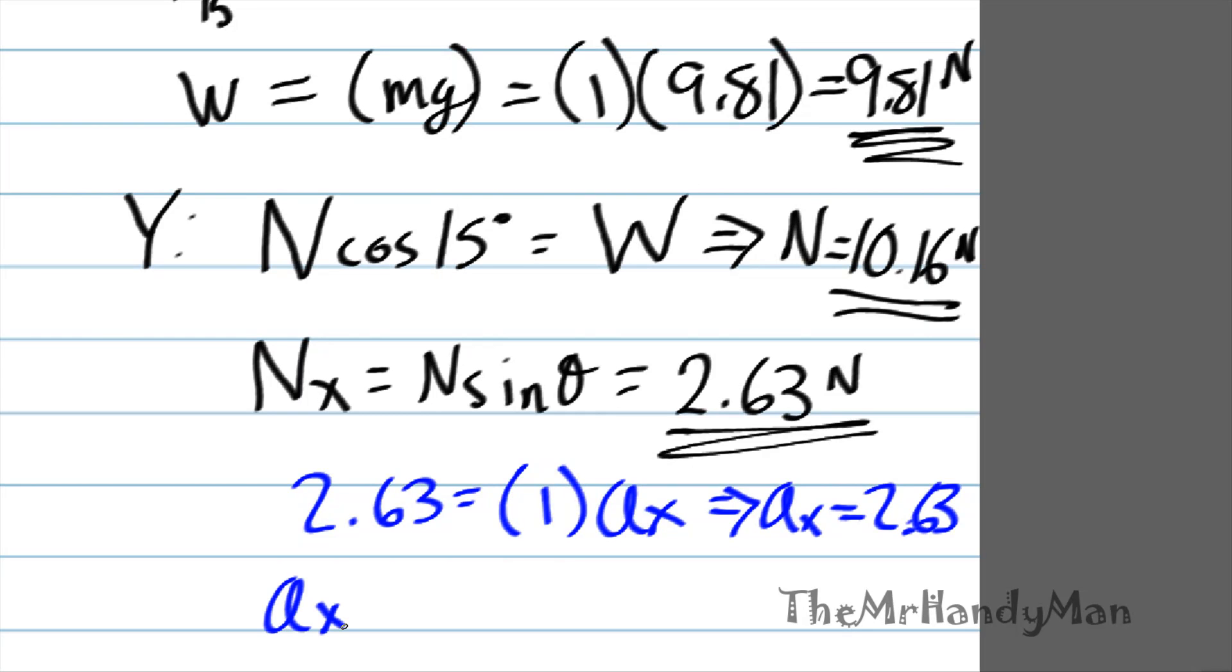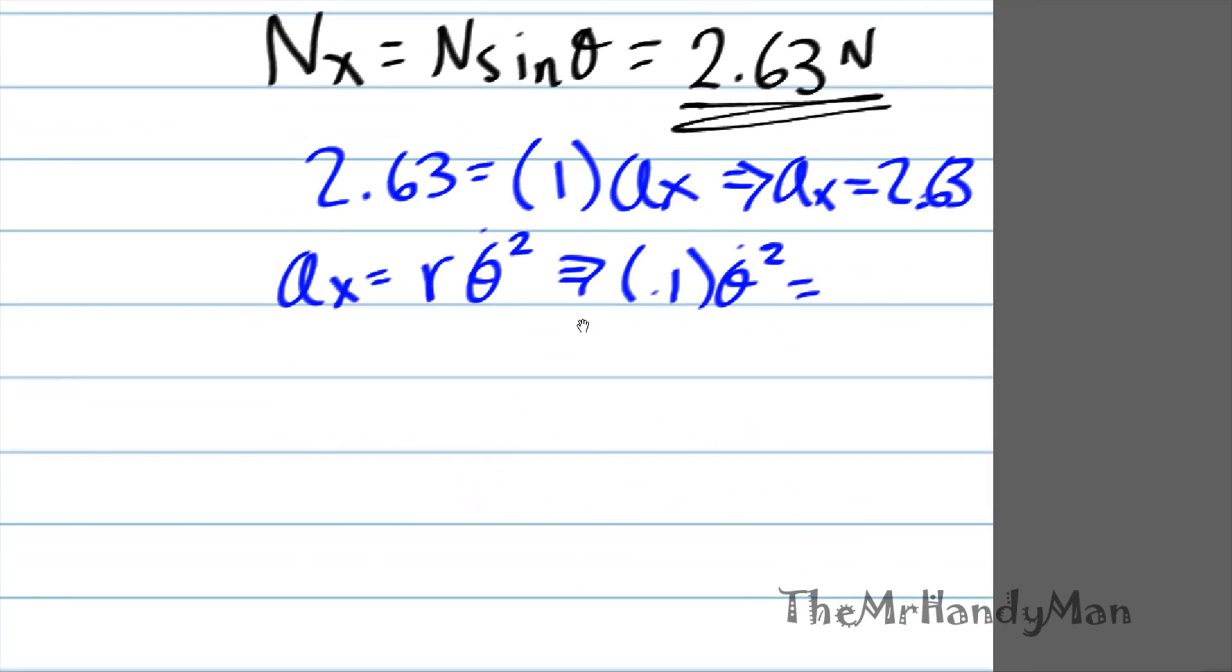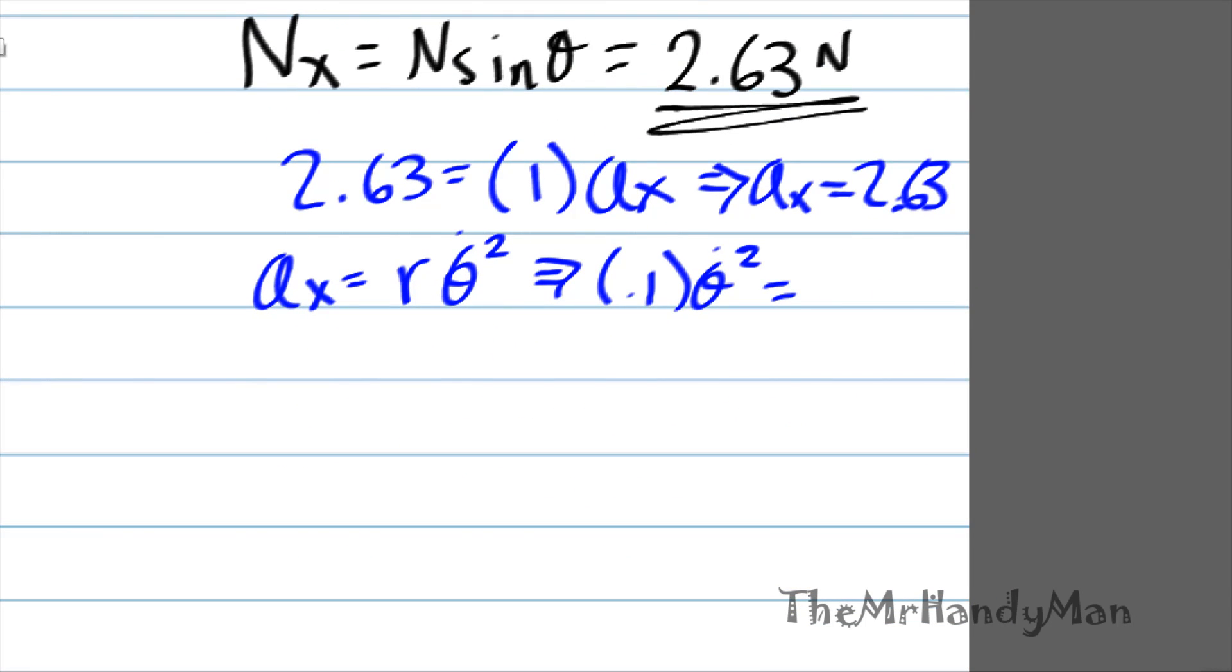Therefore, AX equals R theta dot squared. I don't know if I gave us an R distance, but let's just give it one from the top of my head, 0.1, just to make the math easier. So 0.1 theta dot squared. Working it out, that will be 5.13 radians per second or 49 RPM.